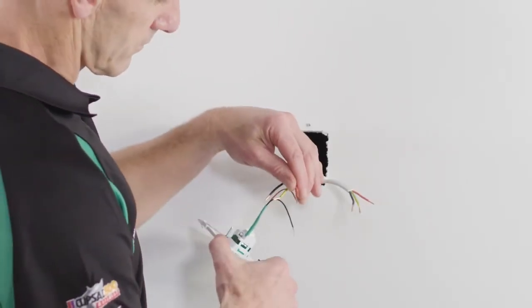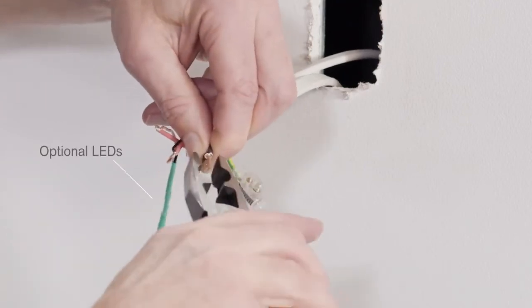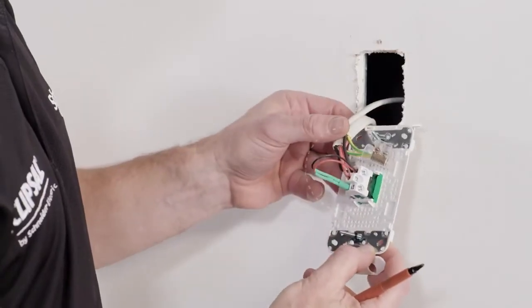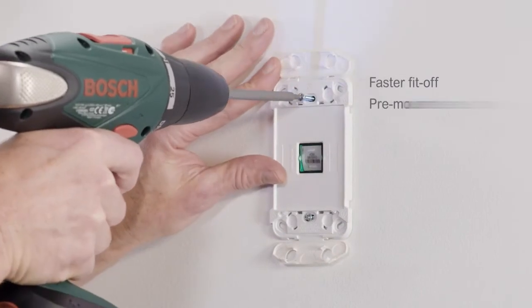Fitting off switches is super quick too. Just wire in the LEDs and terminate. Then fit off faster with the pre-mounted screws.